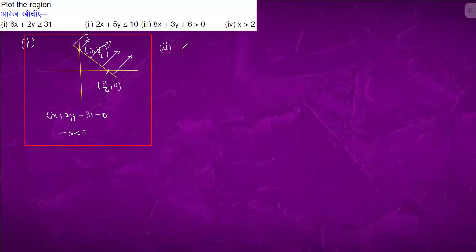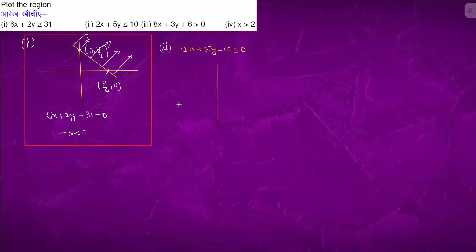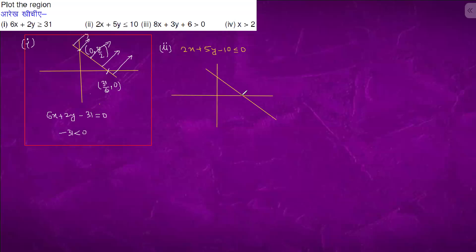Now in question number two we have 2x + 5y - 10 ≤ 0. We will first plot the coordinate axis. When x is 0, y is positive, and when y is 0, x is positive, so it is somewhere like this. When y is 0, x is (5, 0), and when x is 0, y is (0, 2).